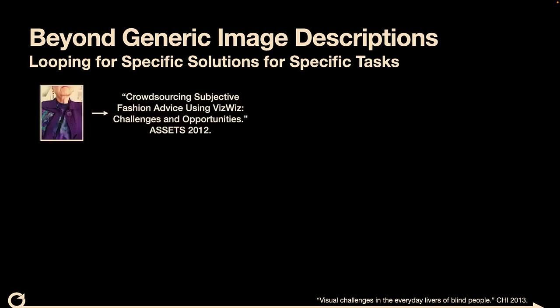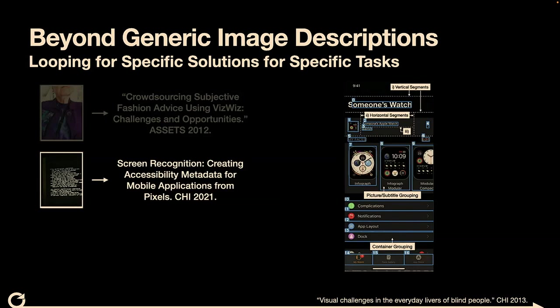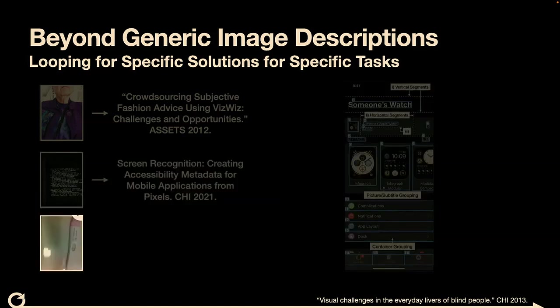We went on a whole bunch of loopy convergences on specific subsets of these problems. For instance, fashion — how do we enable people to get fashion advice not from Mechanical Turk workers but from people who might know what they're doing. We had a whole set of projects using computer vision to interpret graphical user interfaces to make those accessible, especially when developers haven't done that. We didn't work on the pregnancy test, but we should have — because that test is very similar to the COVID tests that were also inaccessible and became a real accessibility problem eight or ten years later.